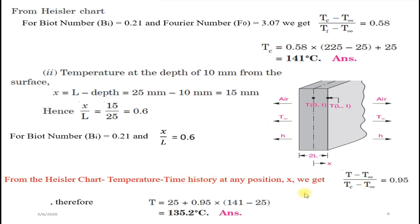From the second graph result, the temperature at a depth of 10 mm from the surface is: T = T∞ + 0.95 × (Tc − T∞) = 25 + 0.95 × (141 − 25) = 135.2°C.